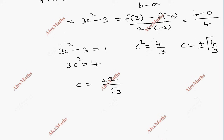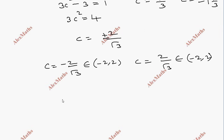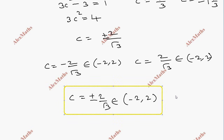Both values c = +2/√3 and c = -2/√3 belong to the open interval (-2, 2). Since 2/√3 gives a value less than 2 in magnitude, both values lie within the interval. Therefore the answer is c = ±2/√3, which belongs to the open interval (-2, 2).